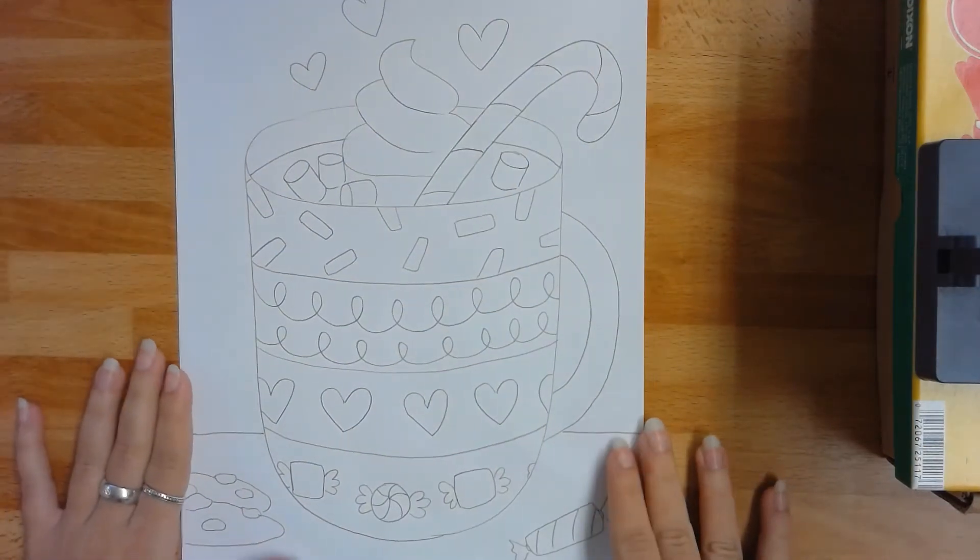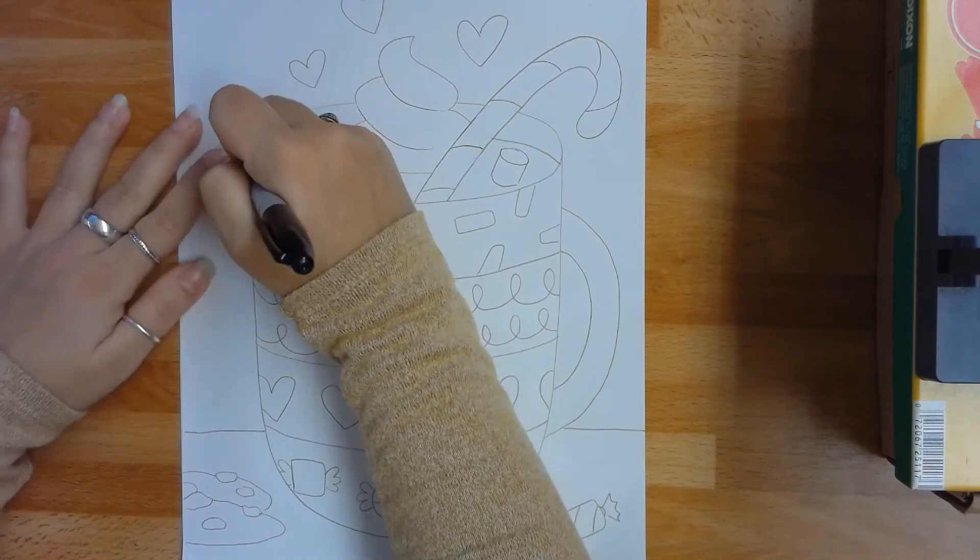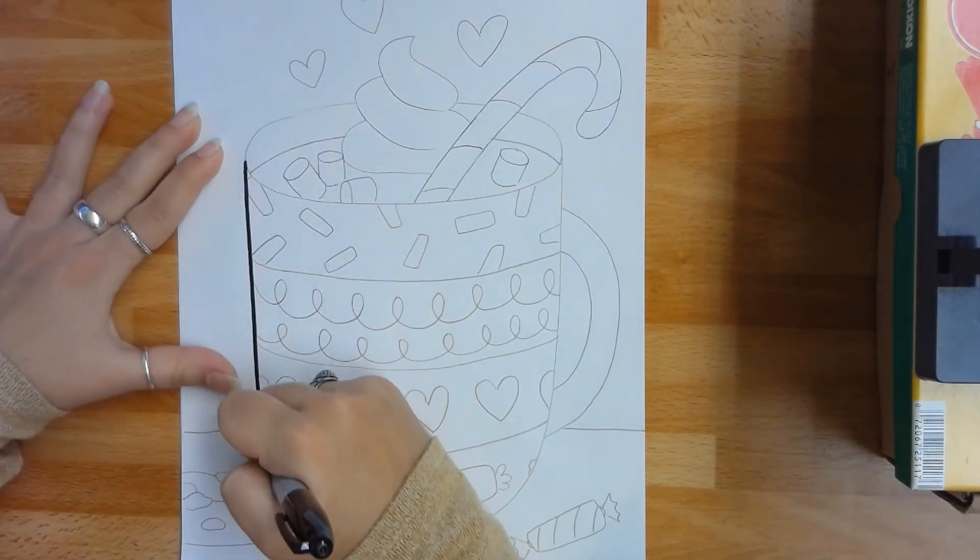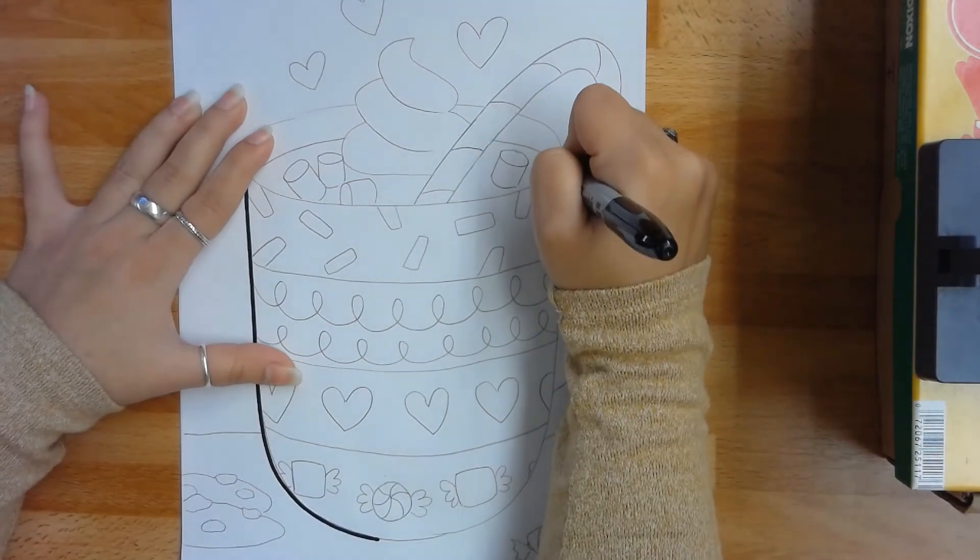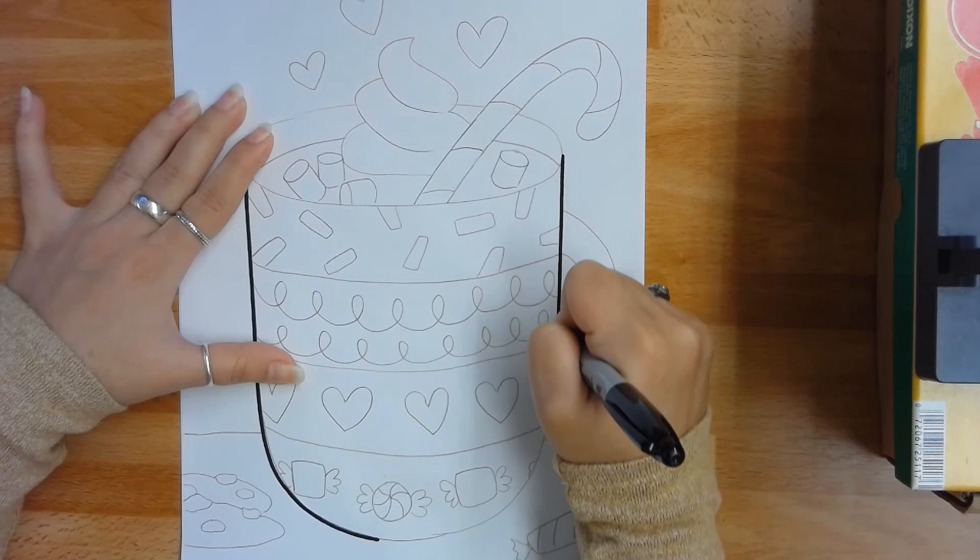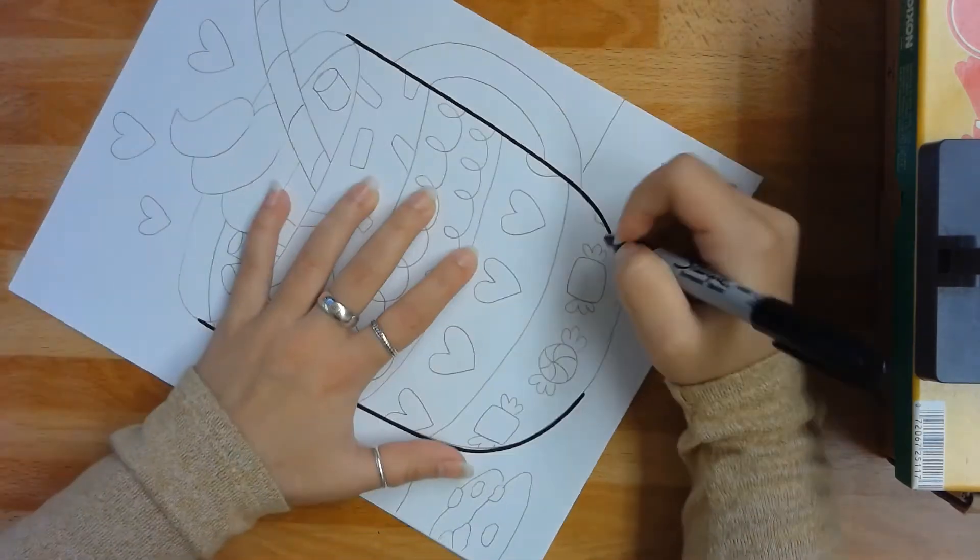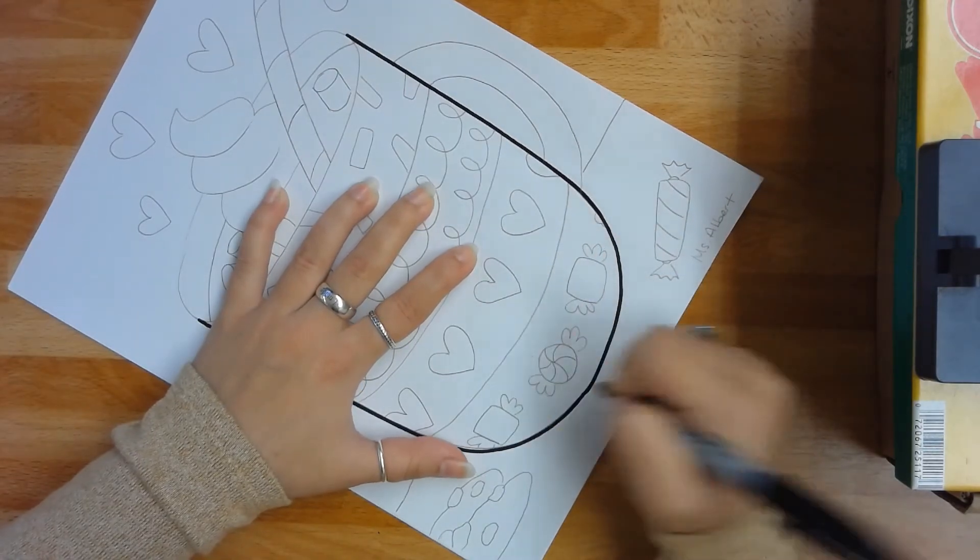Once you've finished drawing all of the different patterns and details on your mug of hot chocolate, it's time to take your marker and begin tracing. Make sure that you trace all of your lines so they're nice and dark and easy to see. If you don't have a black marker, you can use any dark colored art supply. It could be a black crayon or colored pencil, or if you don't have black, I would choose a dark color such as purple or blue so that your lines will stand out.